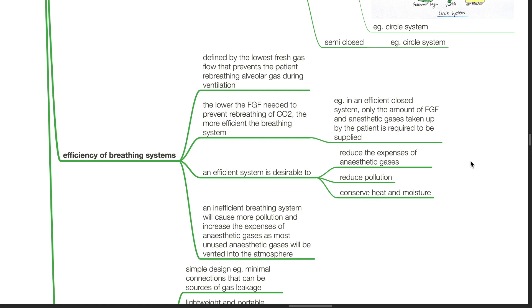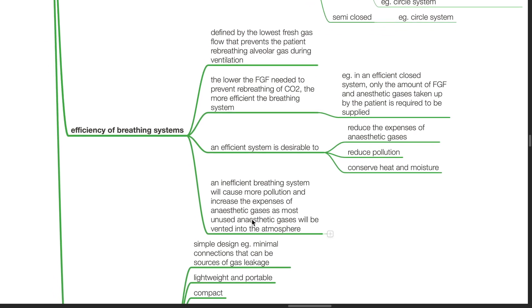For example, in an efficient closed system, only the amount of fresh gas flow and anesthetic gases taken up by the patient is required to be supplied. An efficient system is desirable to reduce the expenses of anesthetic gases, reduce pollution and conserve heat and moisture. An inefficient breathing system will cause more pollution and increase the expenses of anesthetic gases as most unused anesthetic gases will be vented into the atmosphere.